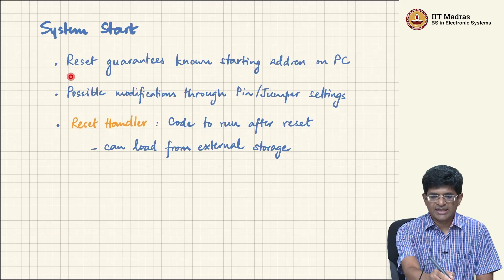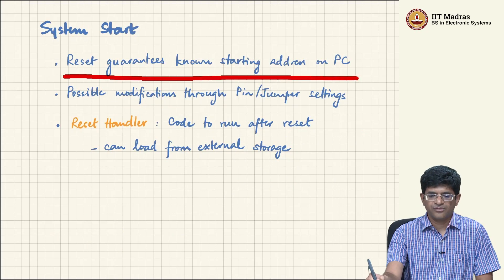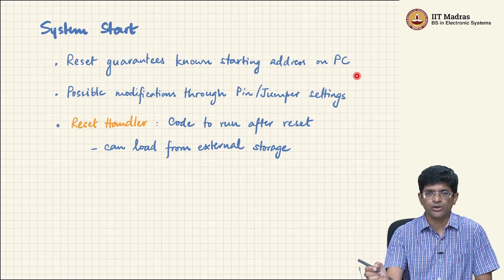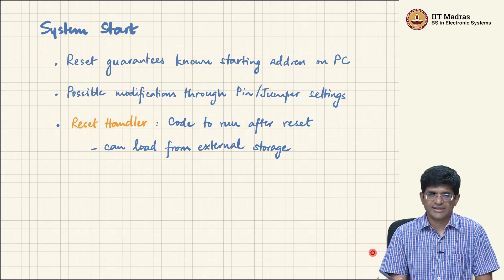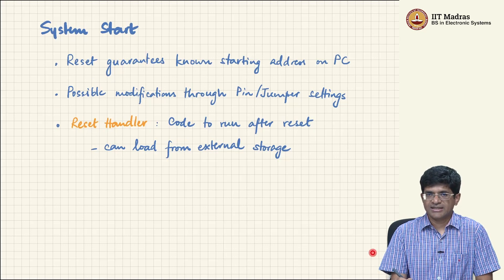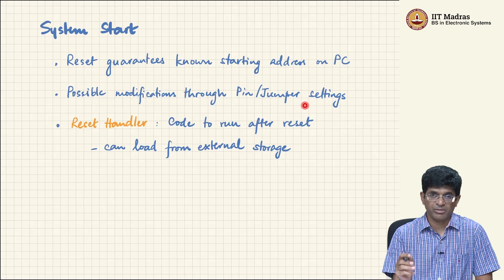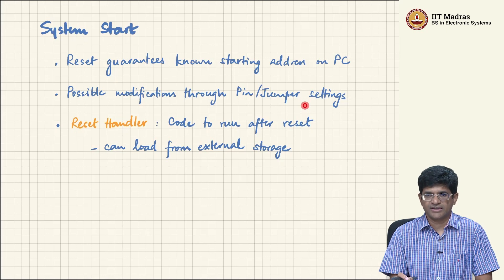At system start, we guarantee that a known starting address is loaded into the program counter. The simplest value is probably just 0, but certain CPUs use some other fixed value — it doesn't matter as long as it is fixed. Interestingly, especially on microcontrollers, this starting address can actually be modified sometimes through jumper settings or pin settings that connect different voltages to a specific pin on the processor.